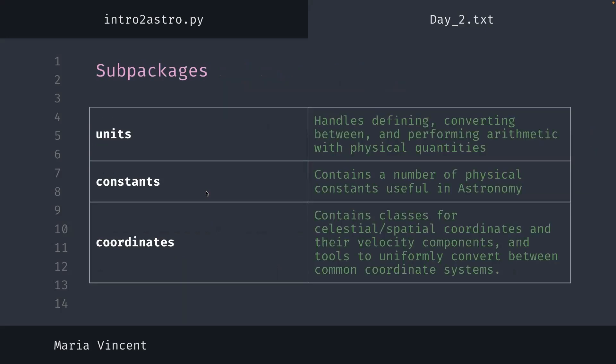Some examples of AstroPy sub-packages: units — which help you convert or handle different kinds of units in astronomy, since astronomers are notorious for not sticking to one set of units. We don't always use SI units because it is impossible to code distances between stars in meters — we use astronomical units, parsecs, and light years. Constants — to avoid having to rewrite different constants over and over again. Coordinates — for an easy way to find and define coordinates for different things we're observing. AstroPy has a lot more sub-packages beyond these.